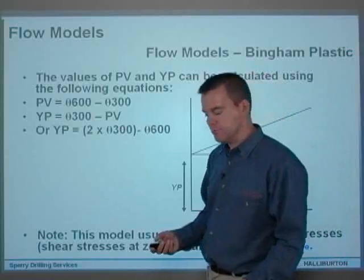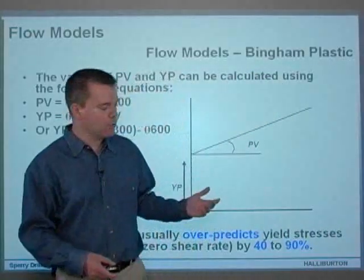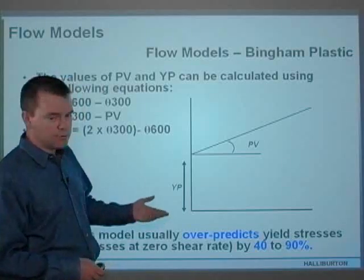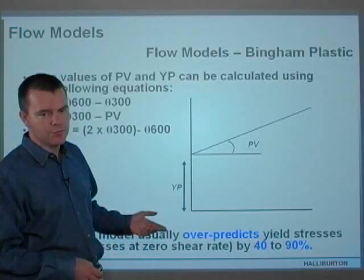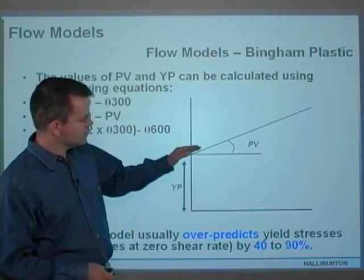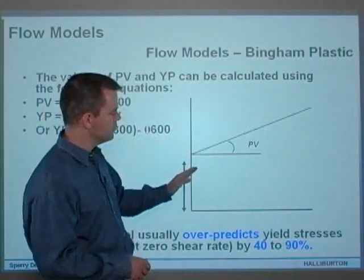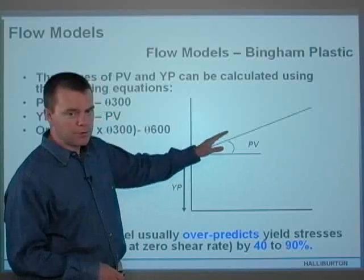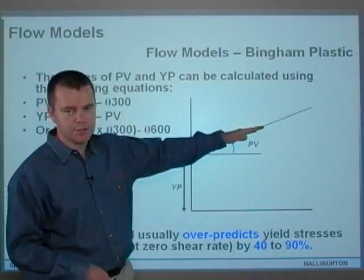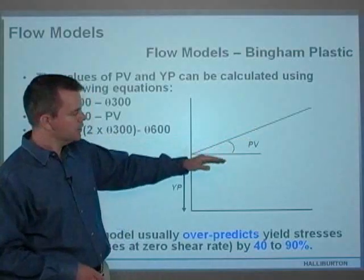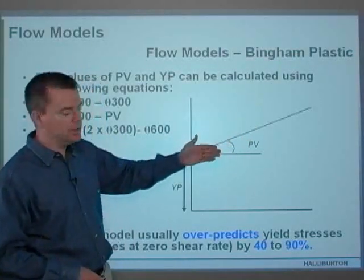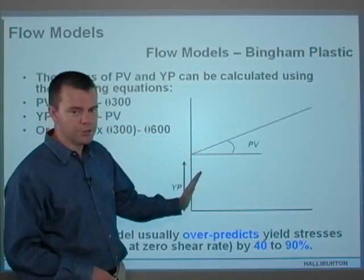As you can see, this model actually usually overpredicts the yield stress, or the shear stress at zero shear rate by 40 to 90%. The reason it does this is because it's a straight line, it's not a curve. We know that at the lower shear rates, the relationship is actually a curve for a non-Newtonian fluid. And the Bingham plastic law, the Bingham plastic model, does not take account of the lower shear rates.